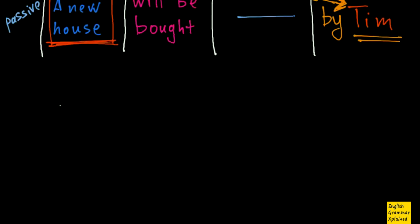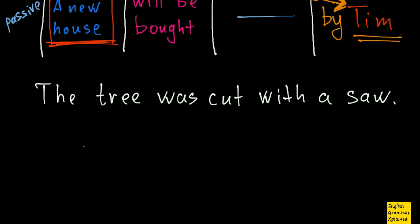There are some other tricks in this rule. For example, the tree was cut with a saw. Here, as before, I have my subject which basically doesn't do anything. Then I have the main verb here in passive voice, that is, past passive.